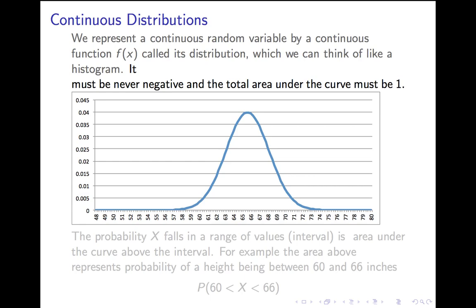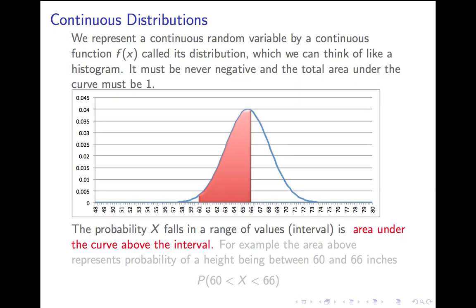Why is that? Because now, we're going to represent the probability that x falls in a certain range of values by the area under that curve in that interval. Right? So for example, that shaded area above represents the probability that a random woman's height will fall between 60 and 66 inches. The probability x is between 60 and 66 is represented by the area under the curve between 60 and 66.